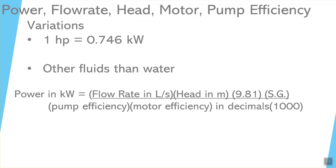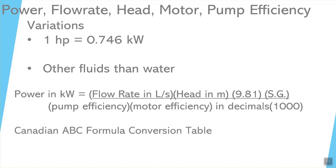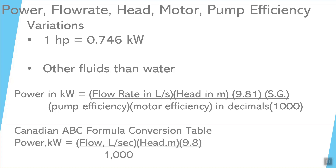Now that we've finished that formula, there's an additional one worth referencing — from the Canadian ABC formula conversion table that would appear on your class 1 through class 4 water or wastewater exam. It's a little simpler: power in kilowatts equals flow in liters per second times head times 9.8, divided by 1,000. However, this formula does not include pump and motor efficiency, which are in a separate formula on the sheet. You have to combine those two formulas yourself, and the full formula with flow rate, head, 9.8, divided by efficiency, efficiency, and 1,000 will cover that.